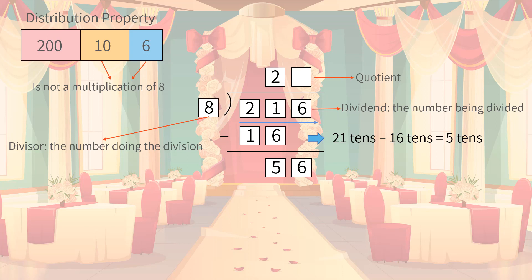What we are doing now is 56 divided by 8. Again, we do simple multiplication now, finding that 7 times 8 equals 56. We write down 56 as the product and do subtraction again. 56 minus 56 equals 0. Thus, we now have no remainders. The partial quotient here is 7, so the final quotient is 27.